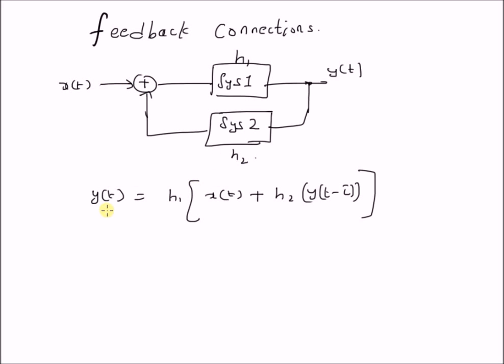And then the final output y of t is given by h1 of x of t plus a transformed version of the original output y of t. So the key difference between feedback systems and normal systems, that is systems without any feedback connections, is that a version of the output is basically presented as one of the inputs.